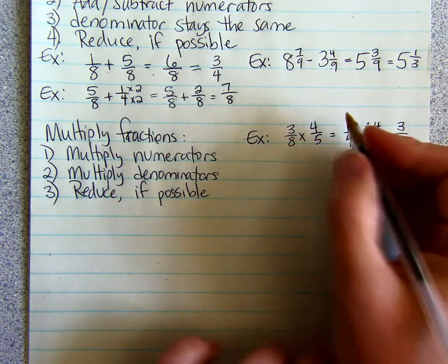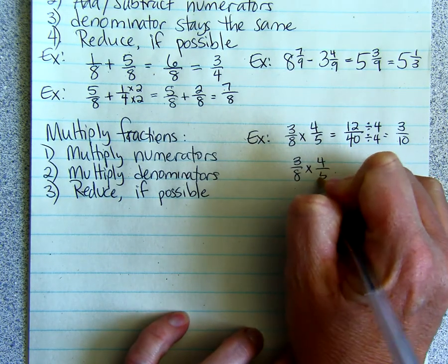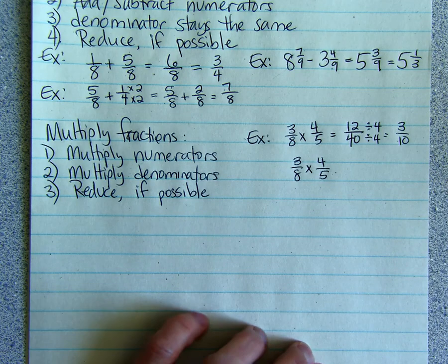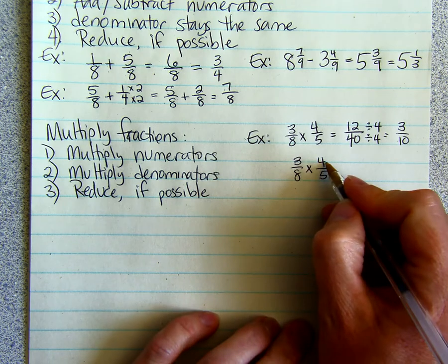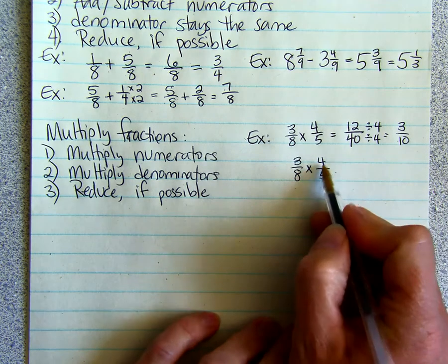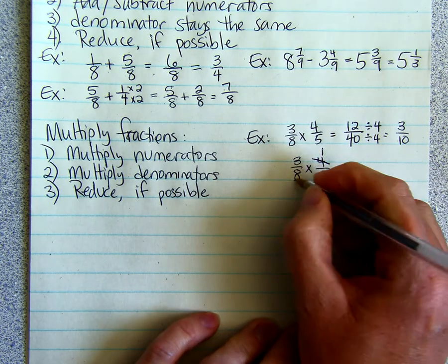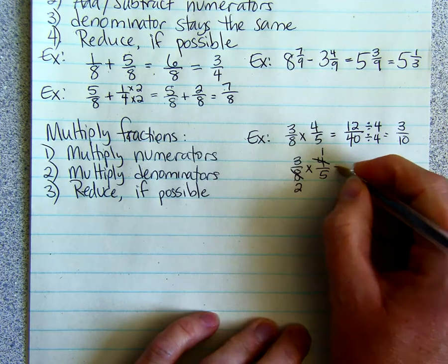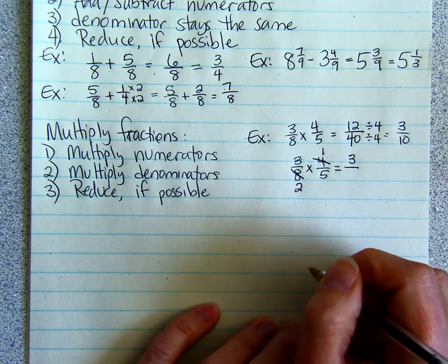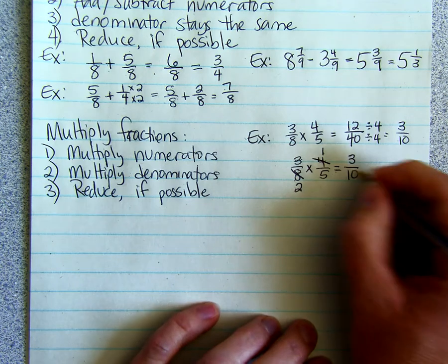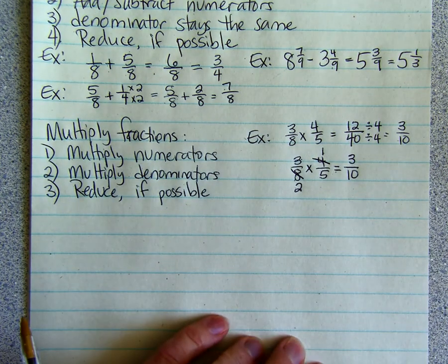Another thing that we can do when we're multiplying, let's use the same example. We can cancel before we multiply. So you look at the numerators, you look at the denominators. See if there's anything that they can reduce by. So here we have a 4 and an 8. We can divide both of those by 4. 4 divided by 4 is 1. 8 divided by 4 is 2. And then multiply 3 times 1 and 2 times 5. And we get 3 tenths. Same answer. We just canceled or reduced before we multiply.